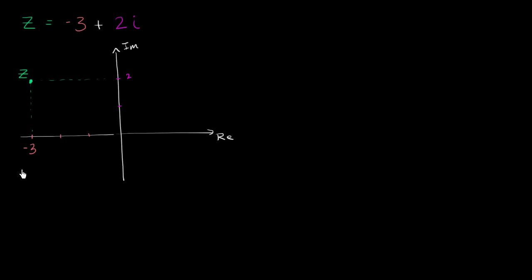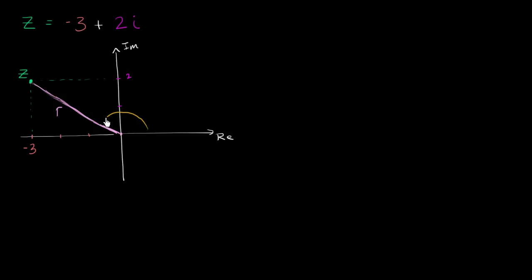Now what I want to think about are other ways to essentially specify the location of z. Instead of giving the real and imaginary parts — essentially the coordinates — let's think about giving a direction and a distance to get to z. We could give the distance from the origin to z, let's call this distance r. But that distance by itself isn't enough; you also have to specify the direction, and so we'll use this angle theta in radians between the positive real axis and the segment that connects the origin and z. If someone gave you this angle and this distance, then you could get to z.